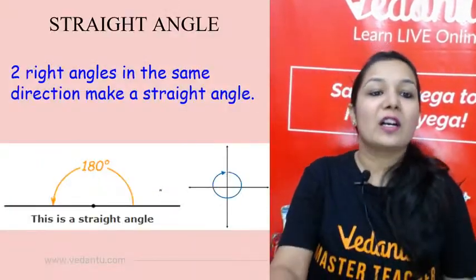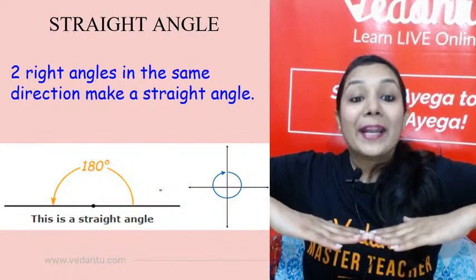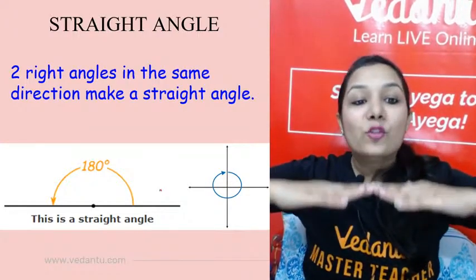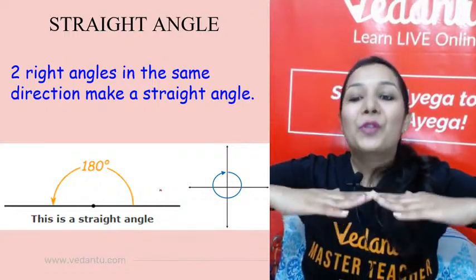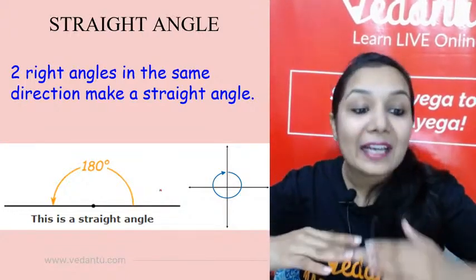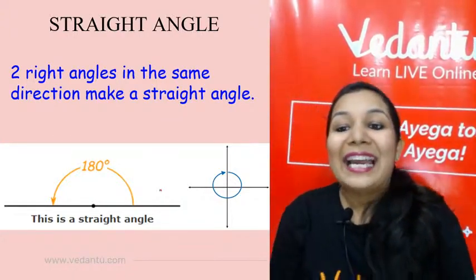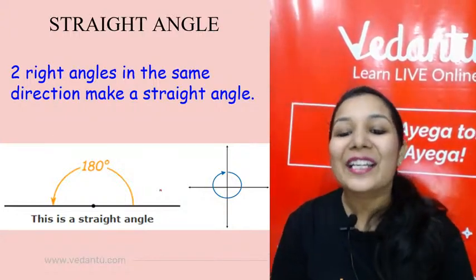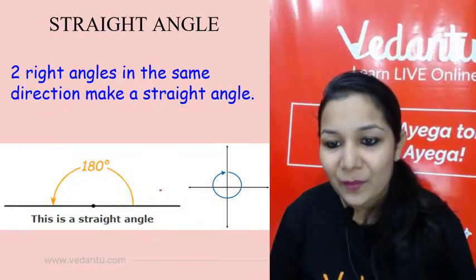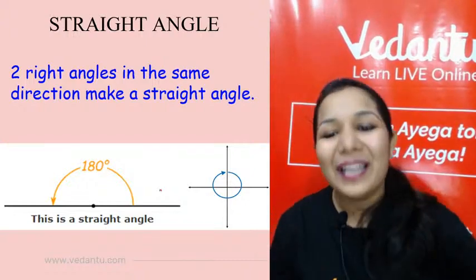Right angle is 90 degrees. A straight angle is formed when I open both arms — joining two right angles together. Two right angles make a straight angle. So if two right angles combine, the measure of the straight angle is 180 degrees. 90 doubled is 180 degrees.